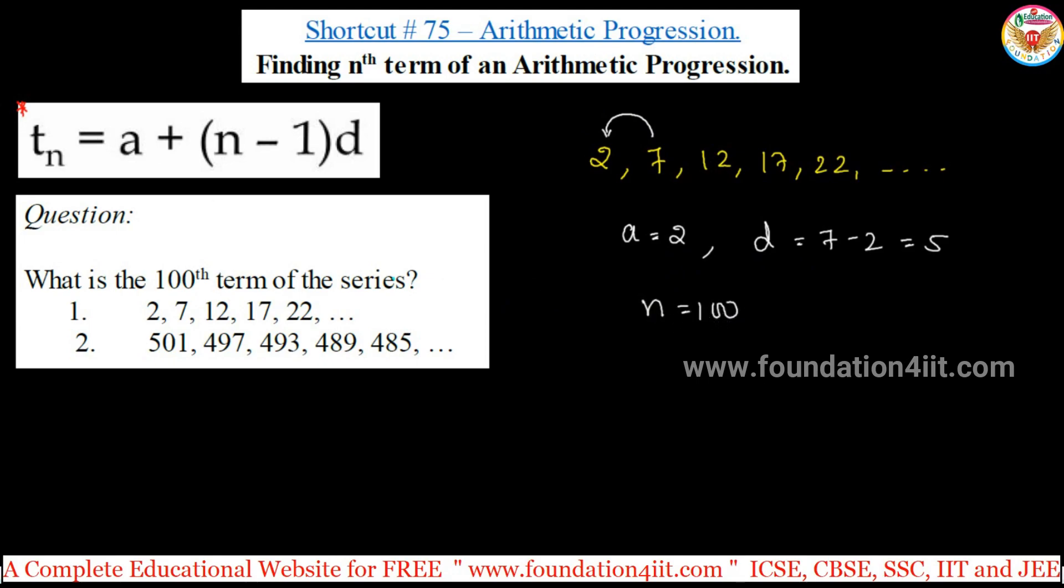Now tn, so t100, the meaning is 100th term. This is t1, t2, and so on. If you want to have an idea, this is first term, second term, third term, so on. This is how we need to find out 100th term. a plus n minus 1 into d. The formula: tn equals a plus n minus 1 into d.